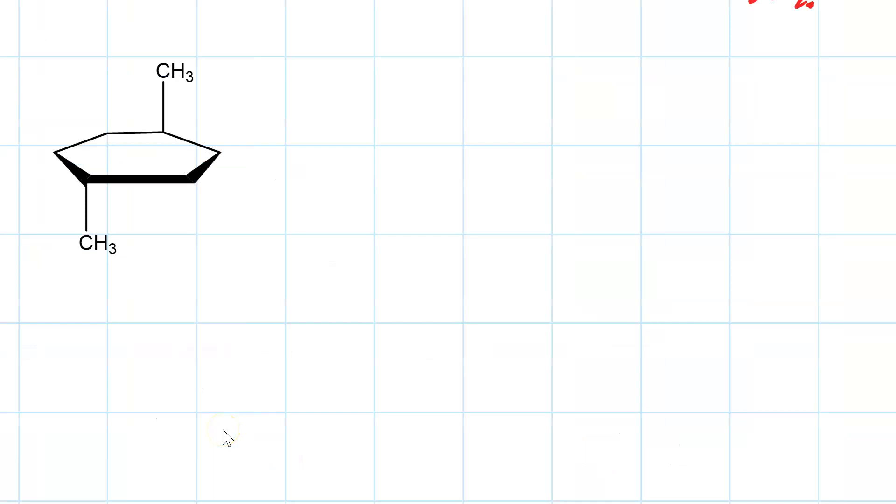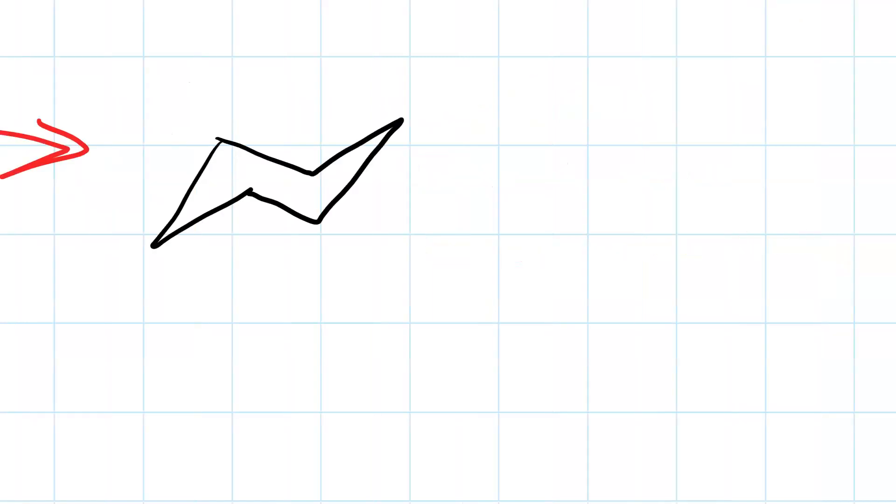Here's trans-1,4-dimethyl cyclohexane. Can you draw the chairs? Pause and work it and then resume when you're ready. So, here's one of them. And we do the ring flip. And we get the other.